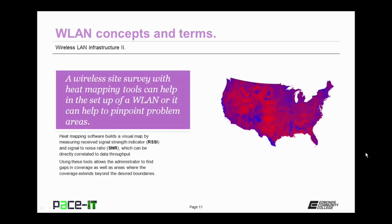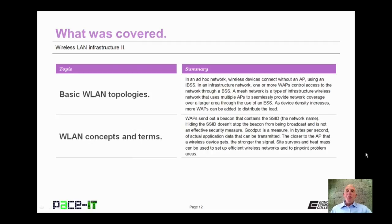A wireless site survey with heat mapping tools can help in the setup of a high quality wireless local area network, or it can help you pinpoint problem areas within your network. The heat mapping software builds a visual map by measuring the received signal strength indicator (RSSI) and the signal to noise ratio (SNR), which can be directly correlated to data throughput. Using these tools allows the administrator to find gaps in coverage, as well as areas where coverage extends beyond the desired boundaries, helping to create a more efficient and secure network.